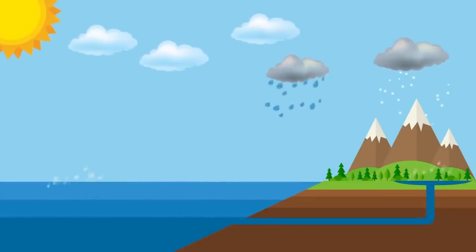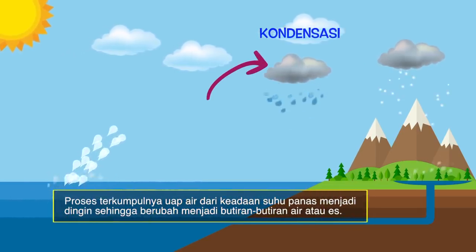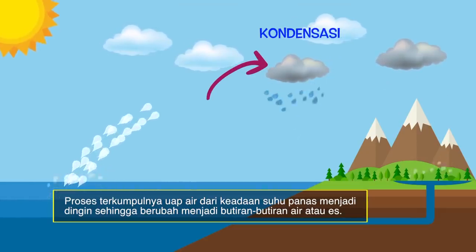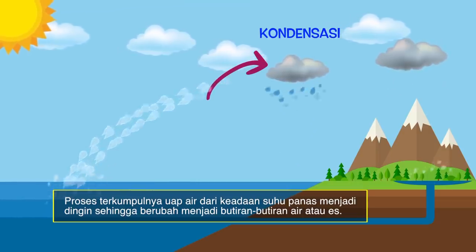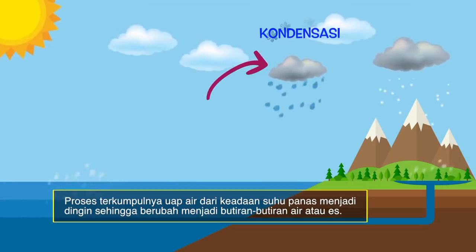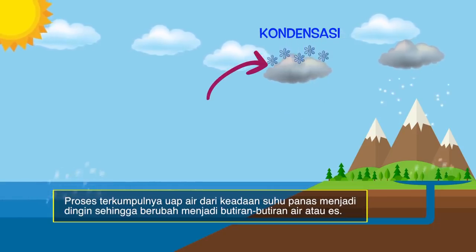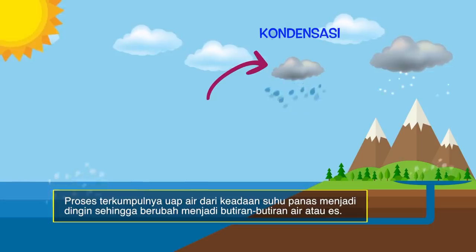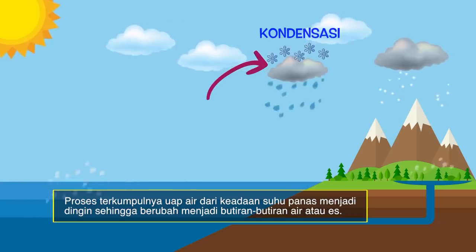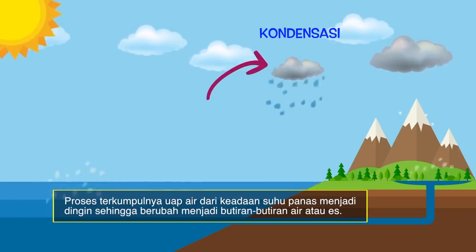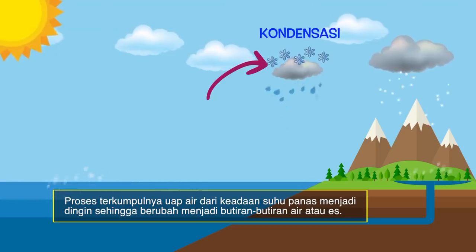Tahapan siklus air yang keempat adalah kondensasi. Setelah air-air tadi menguap dan menjadi uap air, maka akan terkumpul di lapisan atmosfer. Ketika telah mencapai ketinggian tertentu, uap air tersebut akan berubah menjadi partikel es, karena ada perubahan suhu yang terjadi di lapisan atmosfer. Partikel-partikel es tersebut nantinya akan saling mendekat, saling berikatan satu sama lain, membentuk awan dan juga kabut di langit. Proses inilah yang disebut dengan kondensasi.